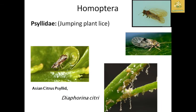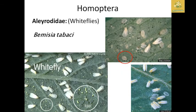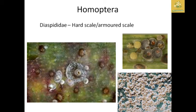Psyllidae insects are known as jumping plant lice. The Asian citrus psyllid has the scientific name Diaphorina citri. Aleyrodidae (whiteflies) — Bemisia tabaci — is one of the important vectors transmitting many diseases in different crops. Diaspidae includes hard scale or armored scale insects.